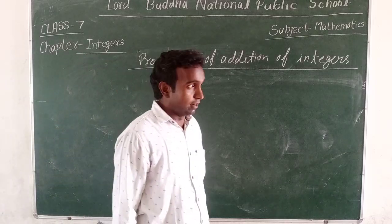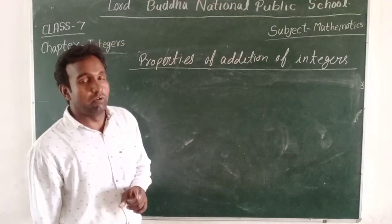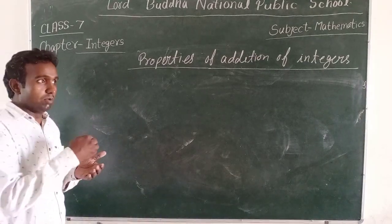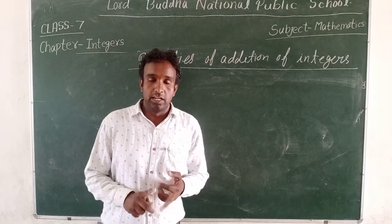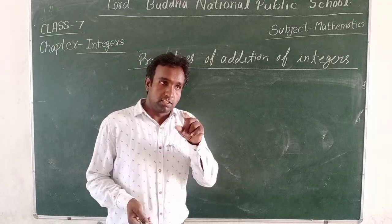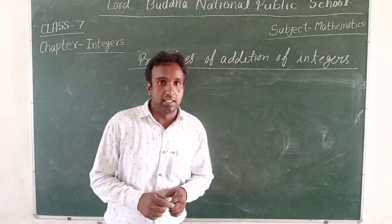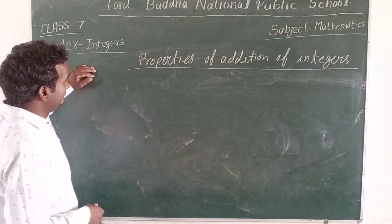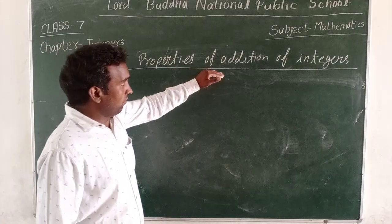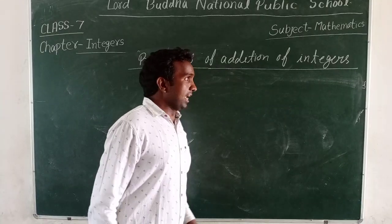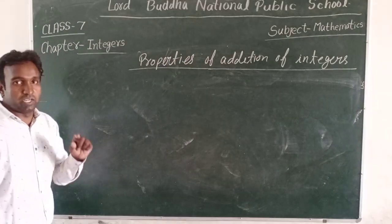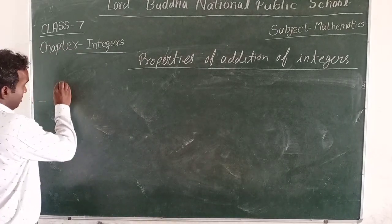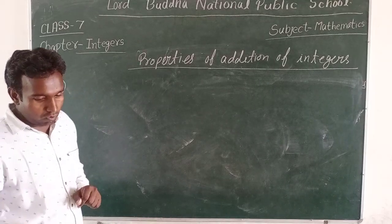Hello everybody, Class 7th students. Today this is the second video of your online class. In the first video we introduced what integers are. The base of integer numbers — there are two types of numbers: natural numbers and whole numbers. We are going to discuss some examples and rules. The second video will cover the properties of integers. The first property is the closure property.